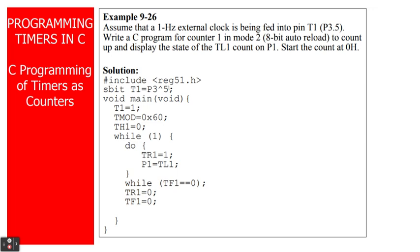In the program, you will see here include reg51.h to include the required header file. We have declared sbit T1 equals P3.5, so port 3.5 will be using T1 as its name. Then we have T1 equals 1, which means port 3.5 will be taken as an input. Then we have timer mode equals to 0x60. I'll be explaining that later. Then we have TH1 equals 0, and then we will repeat continuously. TR1 equals 1, P1 equals TL1.